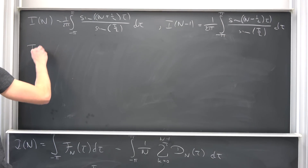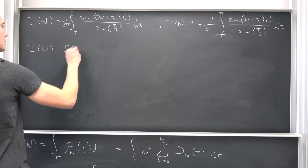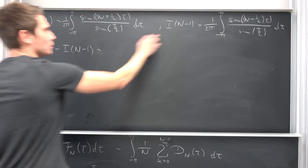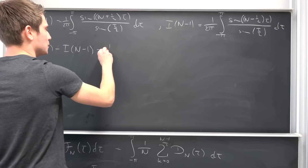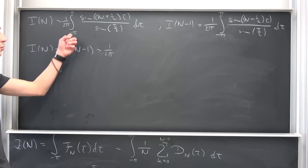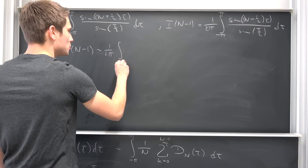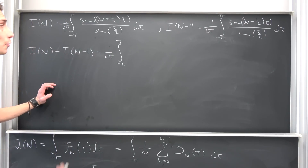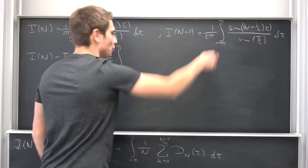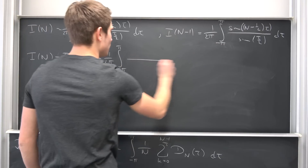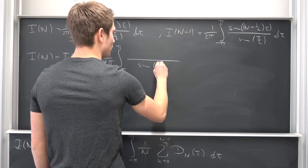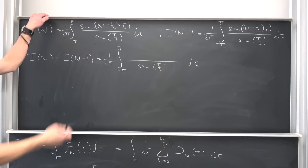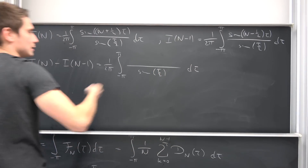So I(n) minus I(n-1) — what is this going to give us? Well, we have this common factor of 1 over 2 times pi. Also we have the same upper and lower bounds, so we can make use of the linearity of the integral to bring those two together. The cool thing is we have the same denominator — sine of tau over 2 — and we are integrating with respect to tau.